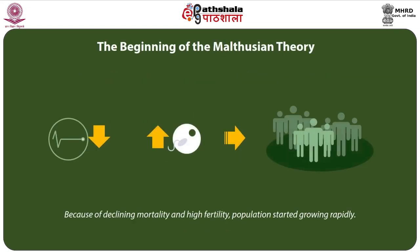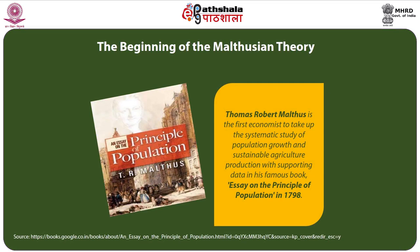Because of declining mortality and high fertility, population started growing rapidly. The rapidly growing population triggered fears among thinkers on the limited resources of land and agriculture yield, expecting misery among people. Some writings suggested adjustments between agricultural production and growing population, with supporting data, in Malthus's famous book titled Essay on the Principle of Population, published in 1798.